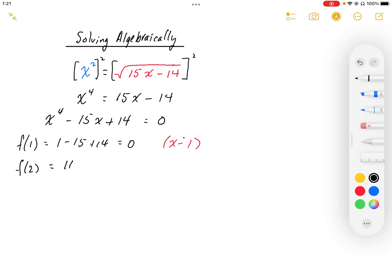And so I end up with 2 to the power 4 is 16, minus 2 times 15 is 30, plus 14, and that is equal to 0. So that tells me that the other factor is x minus 2.